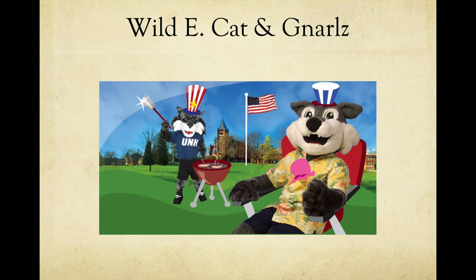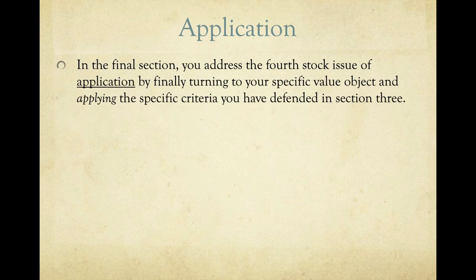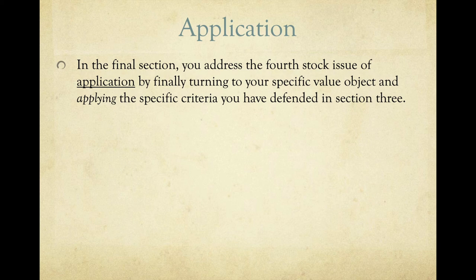We want our perspectives and criteria to be useful for judging any mascot in the category of college mascots — including, for instance, our own mascots, Wildee, Cat, and Gnarls. Then we get to the application section, the final section, where you address the fourth stock issue by turning to your specific value object and applying the criteria you defended in section three. You've made the argument that there are sensible perspectives and reasonable criteria applicable to any object in the category — now you do that application, applying the criteria to the value object you have chosen.